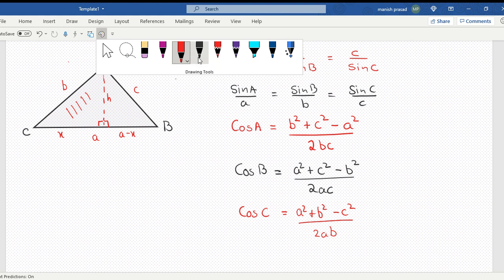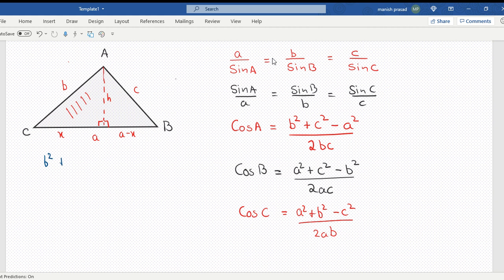So if I apply Pythagoras theorem here, it will become what? B square plus X square equals... Then if we apply the Pythagoras theorem here, it is C square plus A square minus... oh, what did I do? X square, B square plus X square.